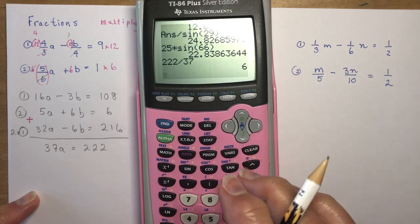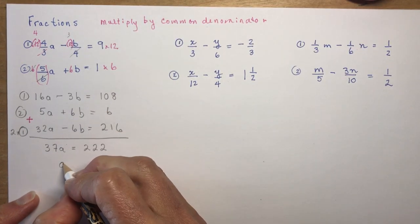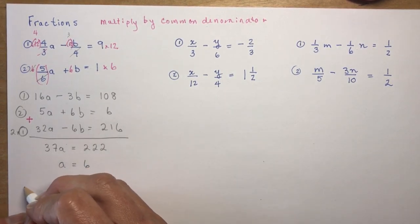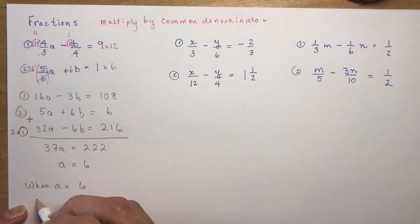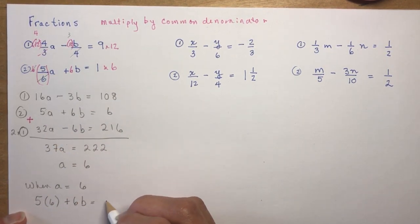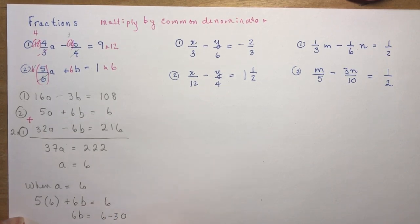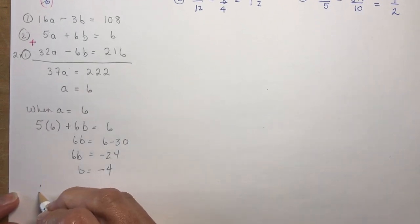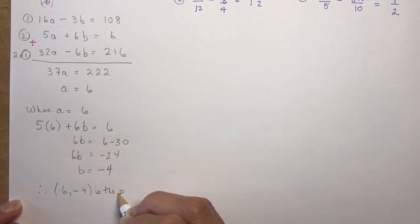I'd want a calculator for that — 222 divided by 37 gives 6, so a equals 6. I do my homework before the lesson! Now finding b: plug a equals 6 into equation 2: 5 times 6 plus 6b equals 6. That's 30 plus 6b equals 6, so 6b equals minus 24, and b equals minus 4. Therefore (a, b) equals (6, minus 4) is the point of intersection.